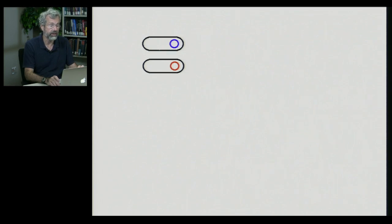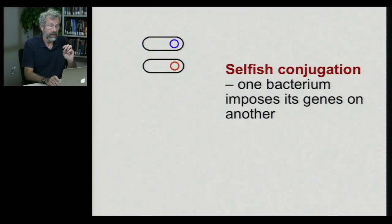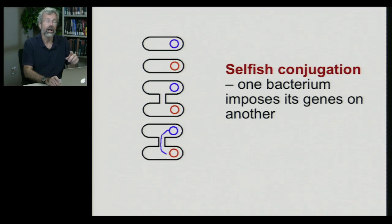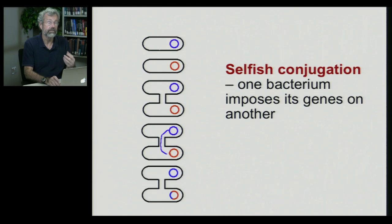Here we have our two bacteria. We're going to see what's called selfish conjugation, where one bacterium imposes its genes on the other. We have the tube that allows the transfer of genetic material between the two individuals, but in this case only the blue chromosome passes its genes to the other individual, which are ultimately integrated into that other individual's genome. So we clearly now have a selfish spread of genetic material by sex.